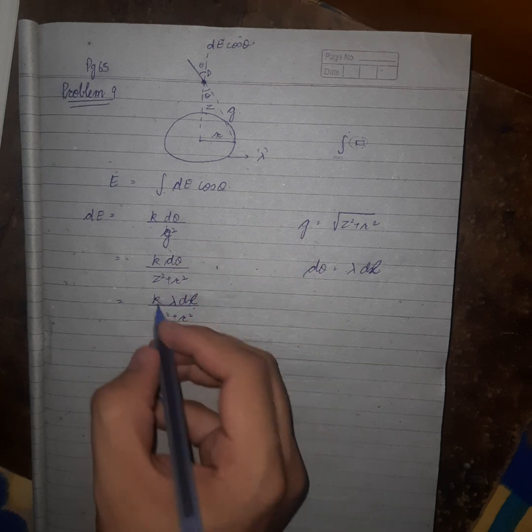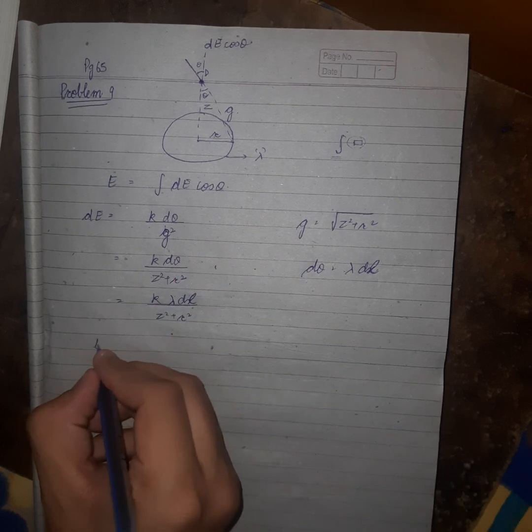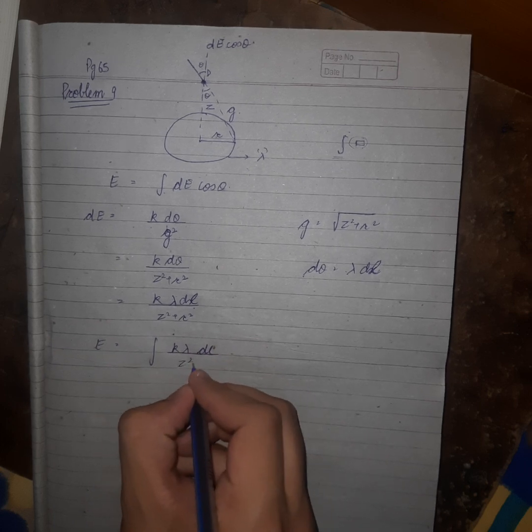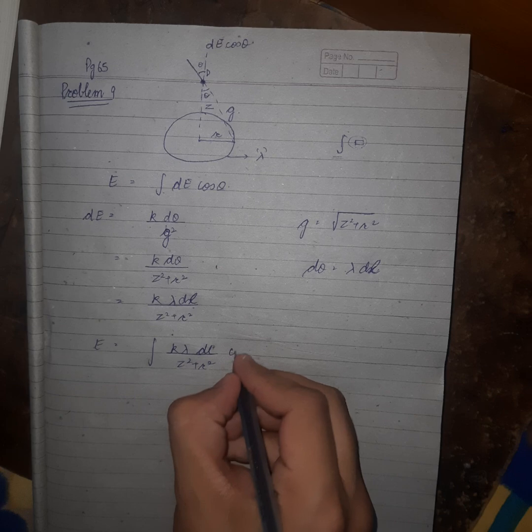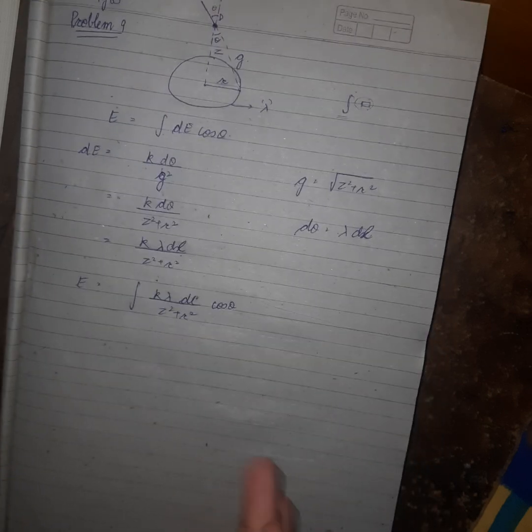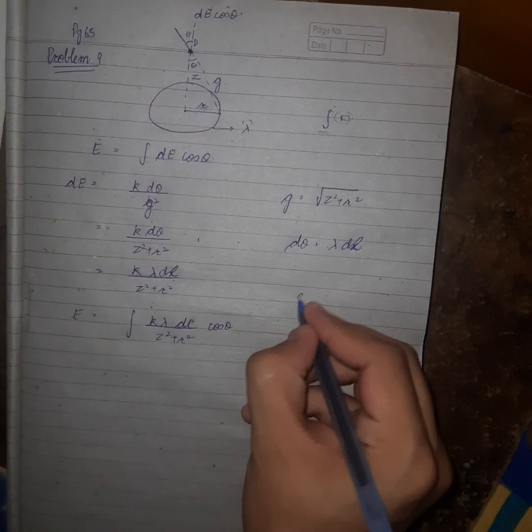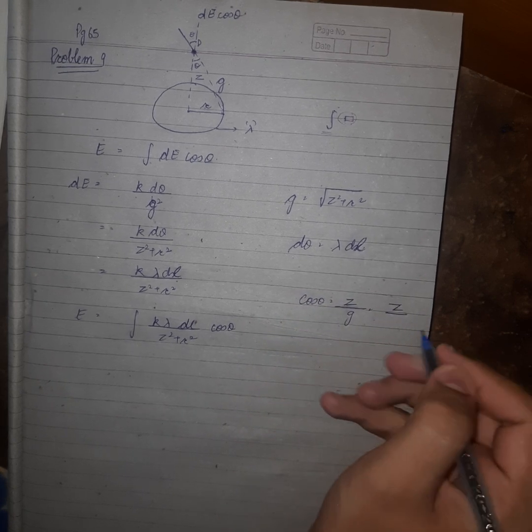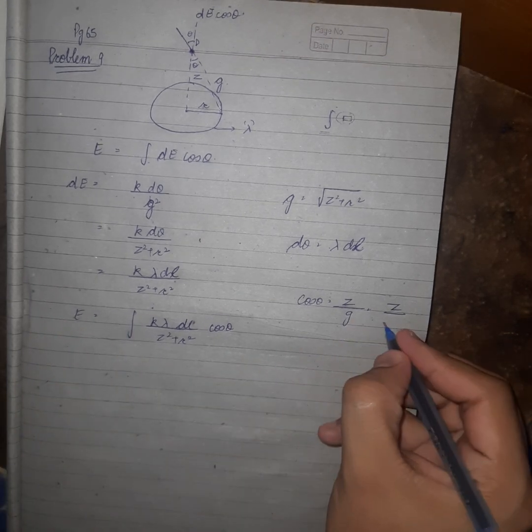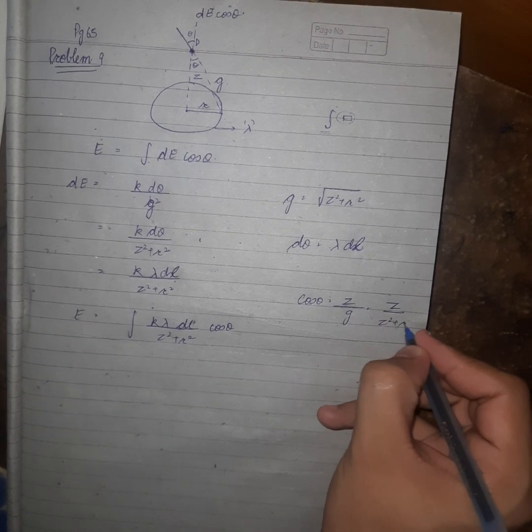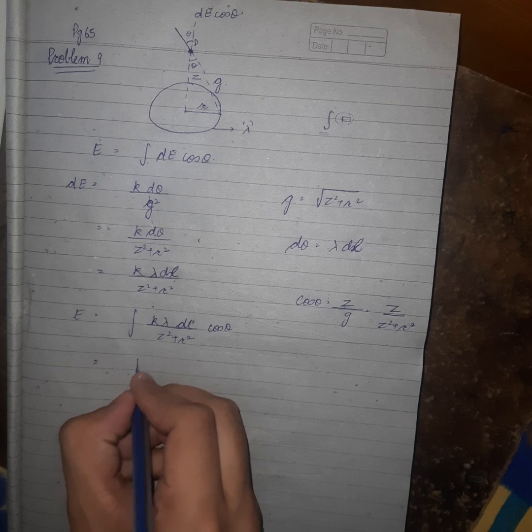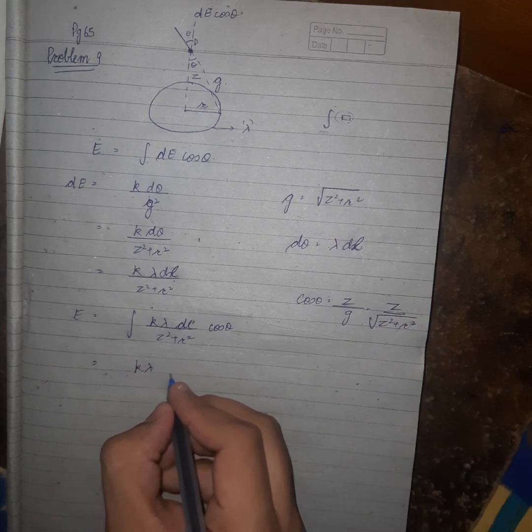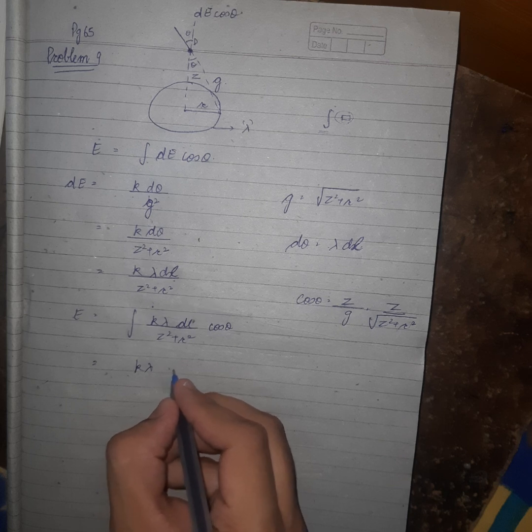So now for net electric field, we have to integrate this: k lambda dl by z square plus r square, times cos theta. Let's calculate cos theta from this figure. Cos theta will be z upon g, which is equal to z upon under root z square plus r square.